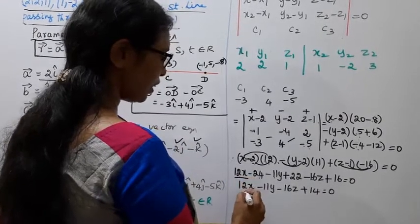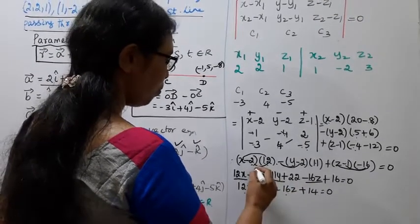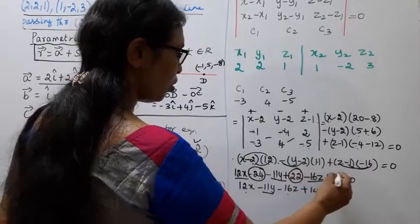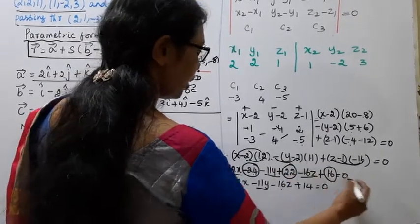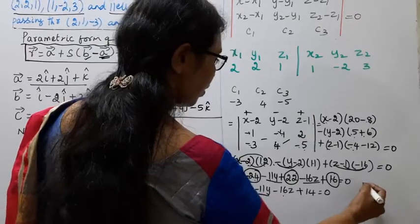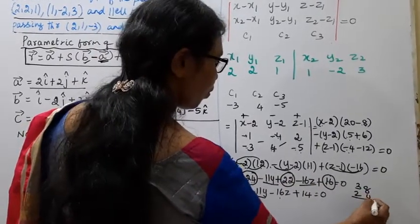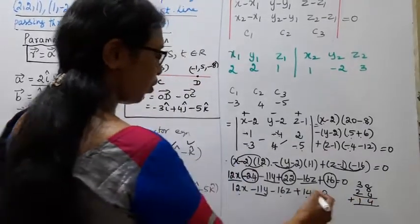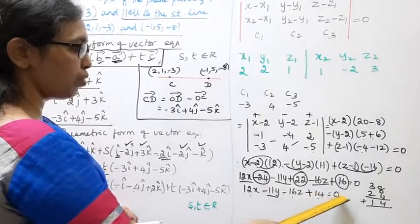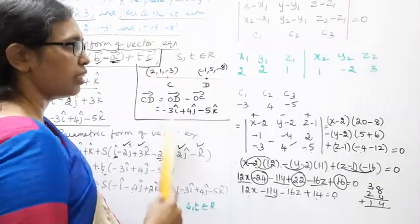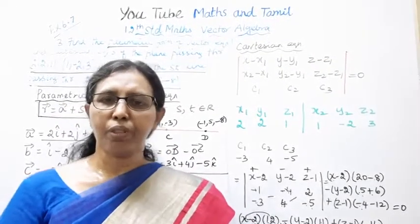Therefore: 12x minus 11y minus 16z plus 14 equals 0. This is the Cartesian equation of the plane. Practice this. This channel helps you get 100 marks. Subscribe to the channel and click the bell button.